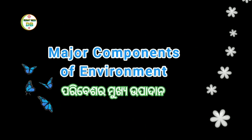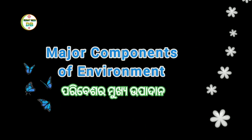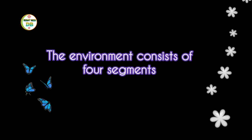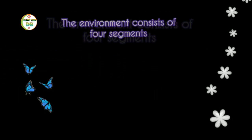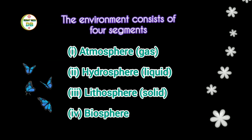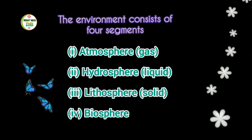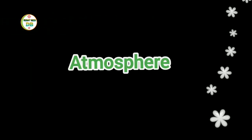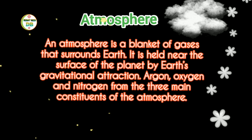Major Components of Environment: The environment consists of four segments — Atmosphere, Hydrosphere, Lithosphere, and Biosphere. An atmosphere is a blanket of gases that surrounds Earth.